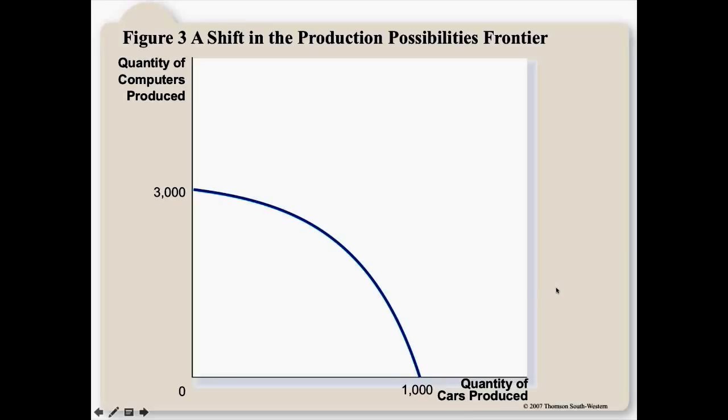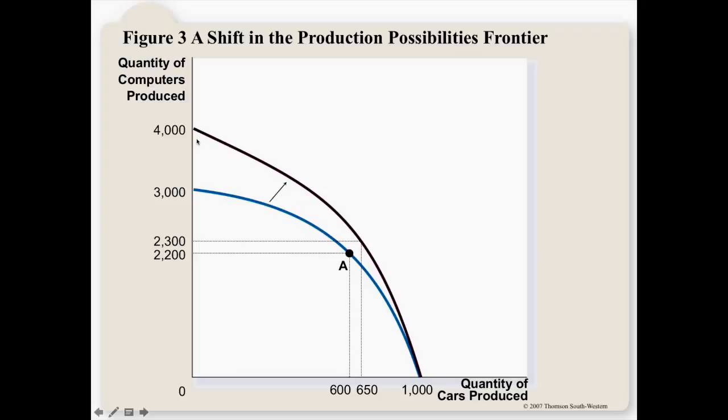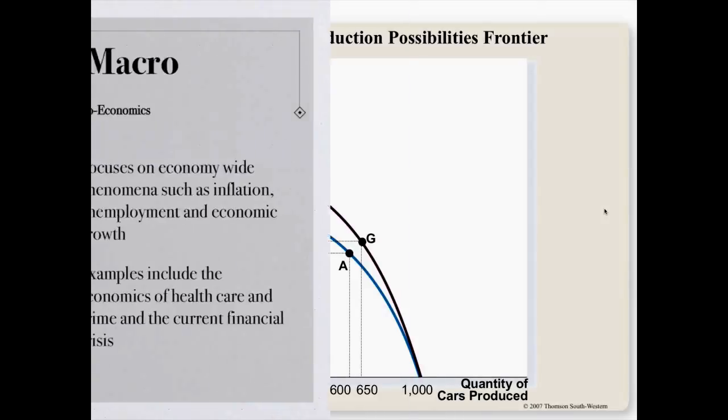But what's interesting is, let's say we have an increase in the ability to produce just computers. If that were to happen, my maximum quantity of computers produced is going to increase. So, if I spend all my time making computers now, instead of producing 3,000, I can produce 4,000. While at the same time, my maximum quantity of cars is actually going to stay the same. But because of this increase in computer production, along most points of the curve, I can actually have more of both. I could have more computers and more cars. Because the economy can reallocate some resources, let's say workers, for example, from making computers to now making cars.